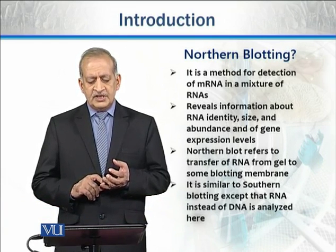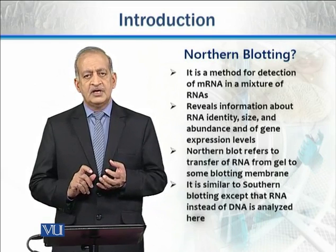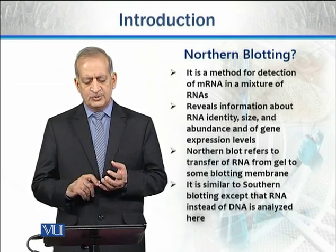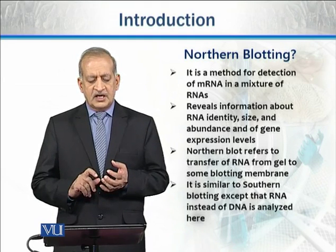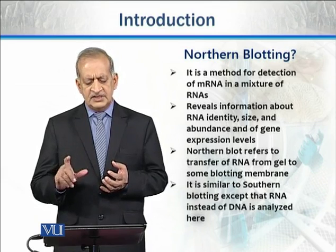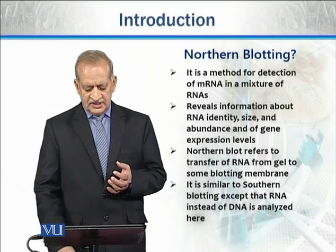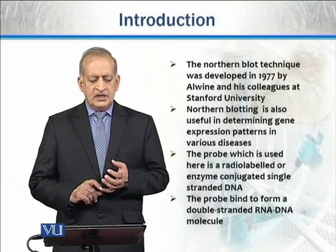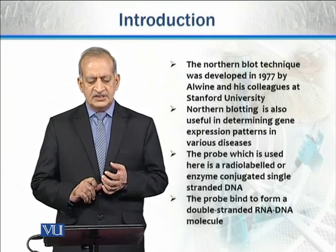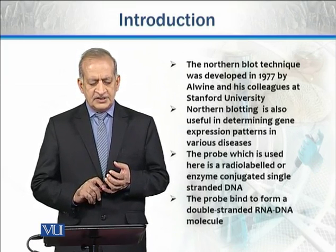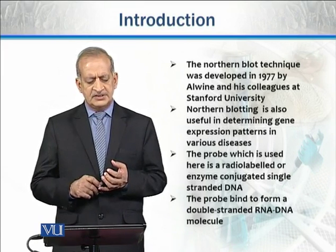Northern blotting refers to the transfer of RNA from a gel to a suitable blotting membrane like a nitrocellulose membrane or other types of membranes. This technique is similar to Southern blotting, except that RNA instead of DNA is analyzed here. Northern blotting technique was first developed by Alvin and his colleagues in 1977. This technique is also useful in determining gene expression patterns in various diseases like cancer and other diseases.